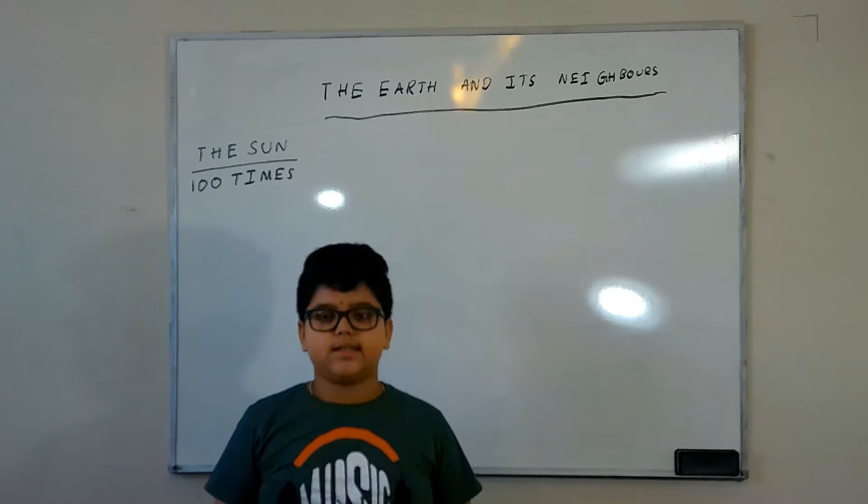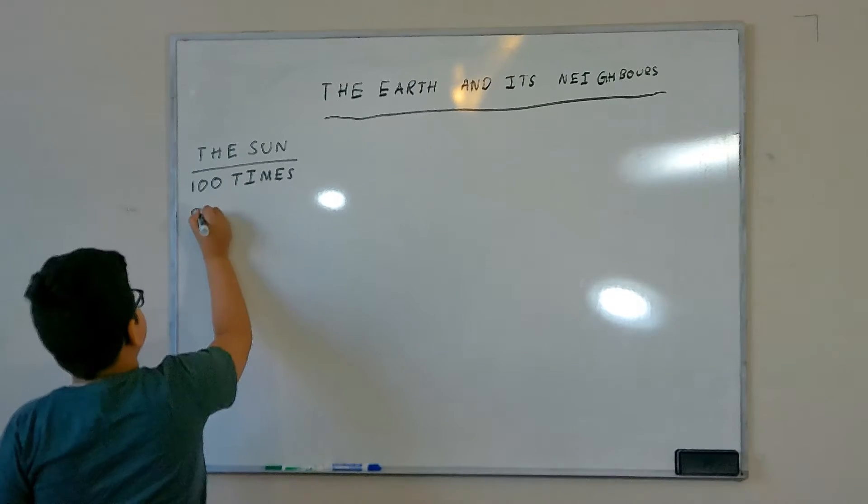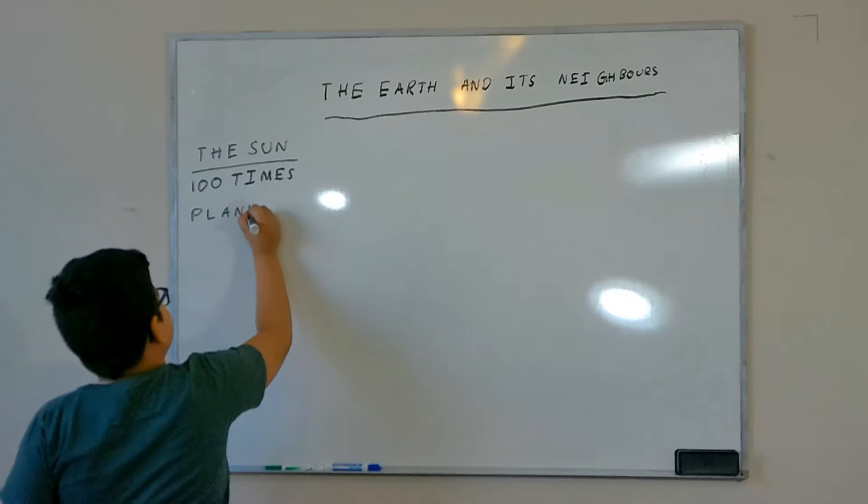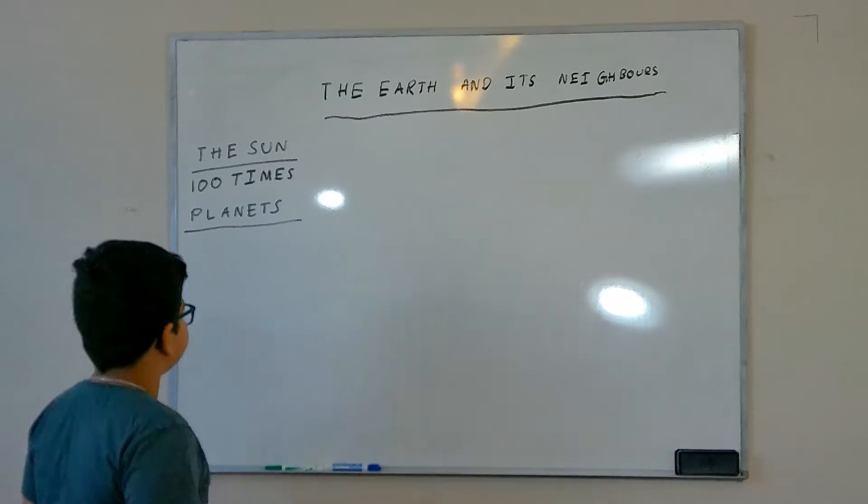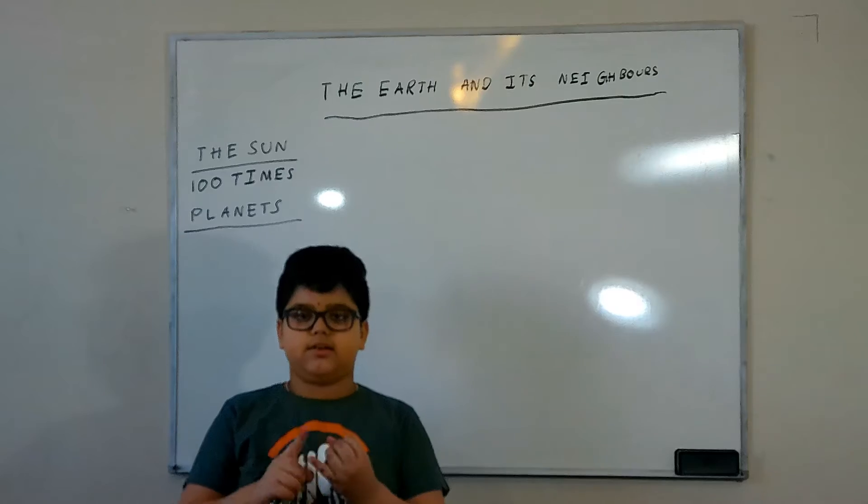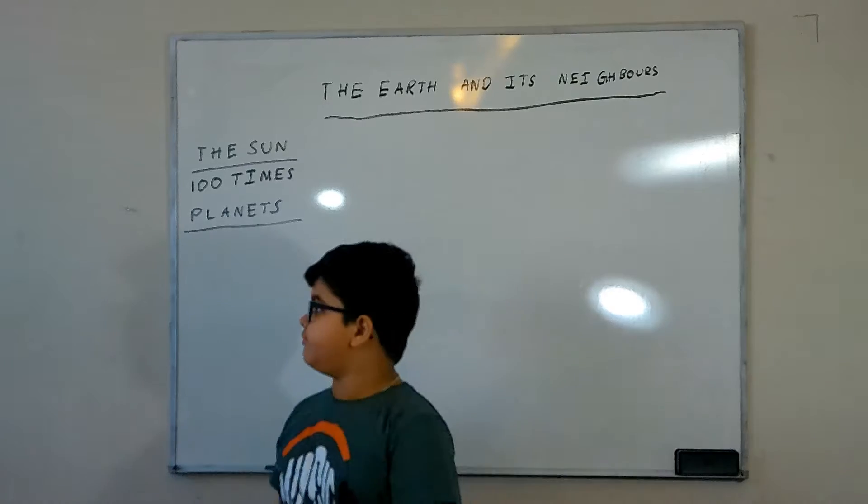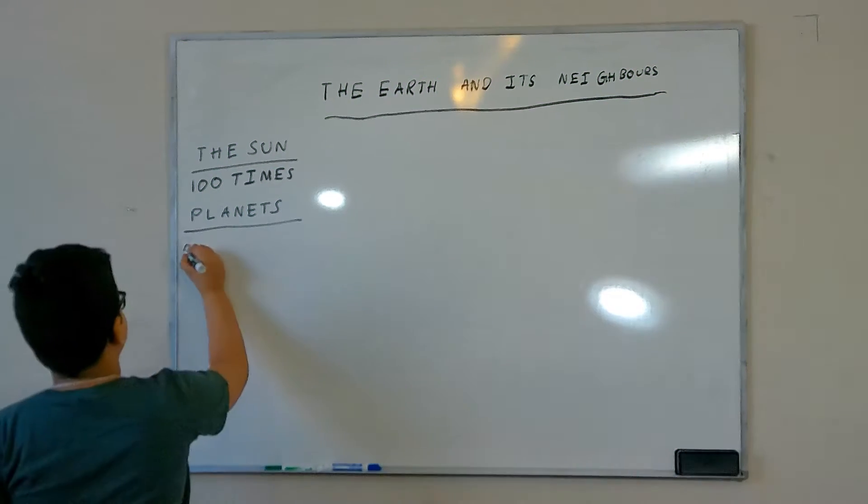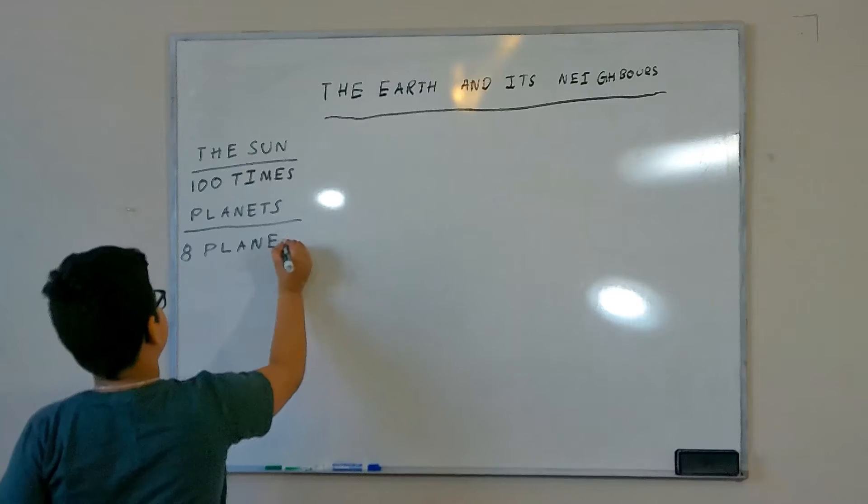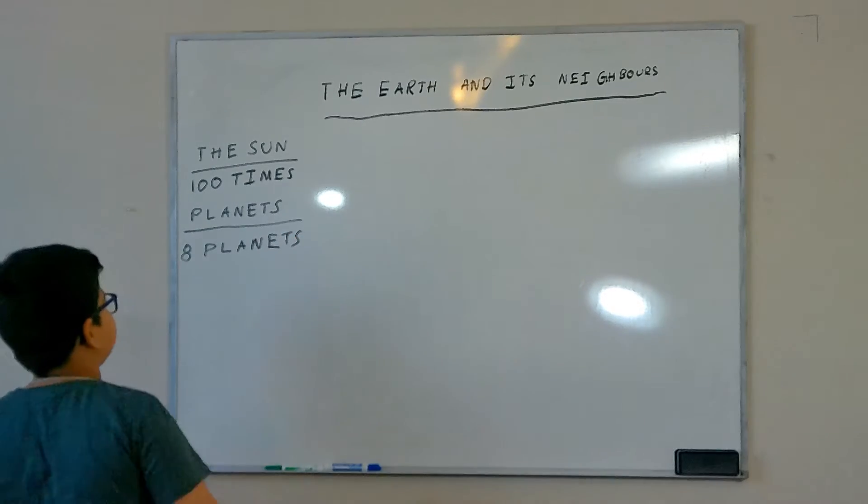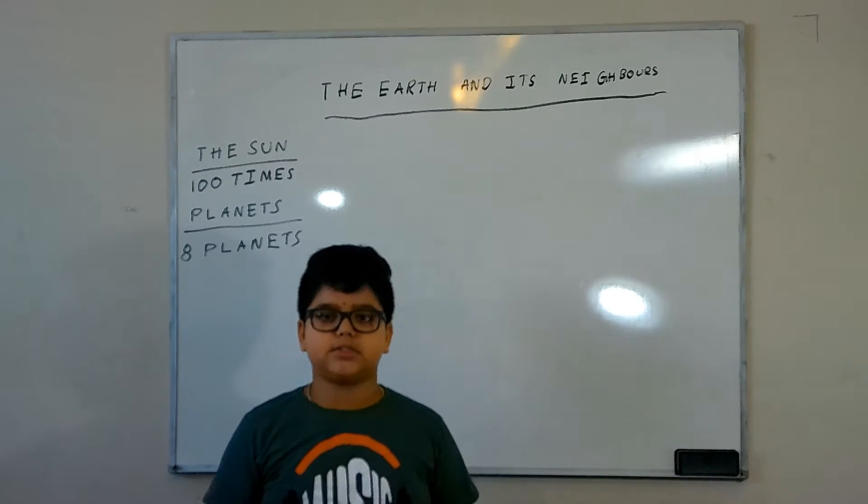The next one is planets. There are eight planets: Mercury, Venus, Earth, Mars, Jupiter, Saturn, Uranus and Neptune. Planets move around the Sun in fixed paths called orbits.